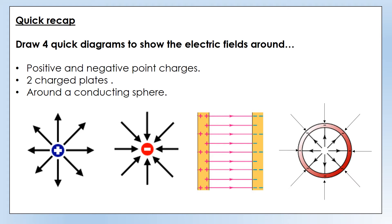And then finally our conducting sphere. I've made mine a negatively charged conducting sphere, so you can see that the lines go towards the conducting sphere whether they're outside or inside. If you made your conducting sphere positive, your lines would be in the opposite direction — going away from it both inside and outside. So it doesn't matter what charge you made your conducting sphere; it should look something a little bit like this.